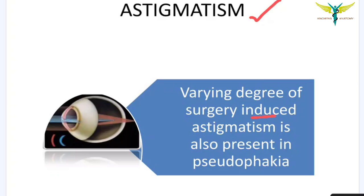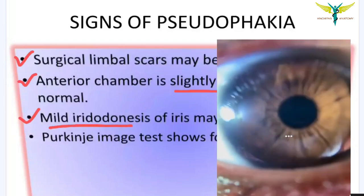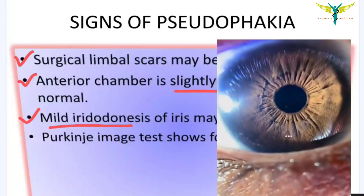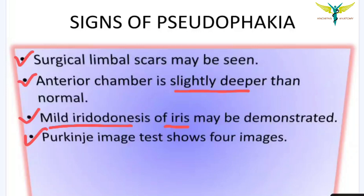The signs of pseudophakia include: surgical limbal scars may be seen; the anterior chamber is slightly deeper than normal; mild iridodonesis of the iris may be demonstrated; and the Purkinje image test shows four images.